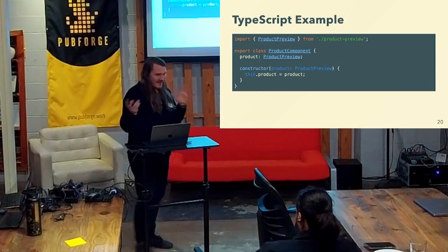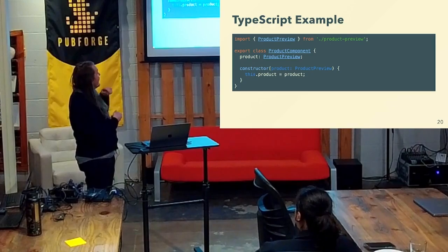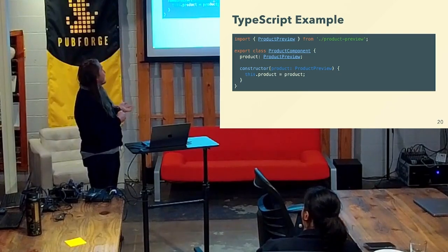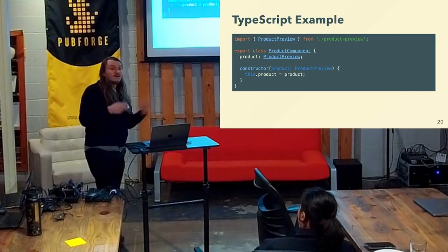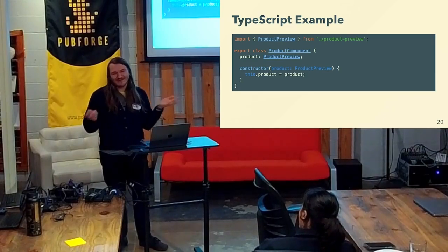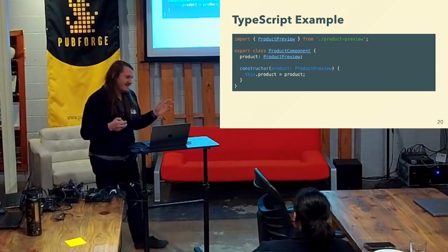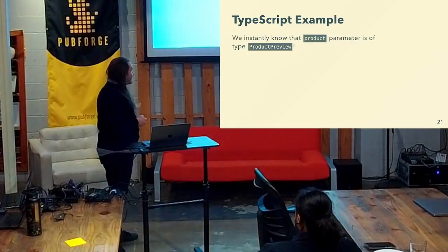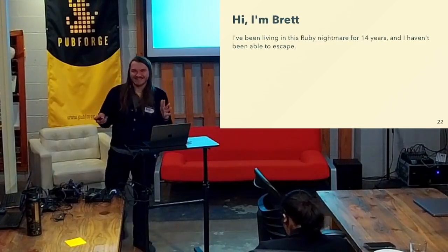Now let's just take that code we first looked at and put it in TypeScript. So, ProductPreview — remember how long it took us to find ProductPreview before? It's the first thing right there. We have basically the attr_reader equivalent, we know it's ProductPreview. And then we have a constructor, which is just like those initializers. And we know that it's of type ProductPreview. Completely different. A little bit more verbose — people might say less elegant. But there's no contest: you don't get paid more for writing elegant code. The software's not better for writing elegant code or shorter code. It's not code golf. And to me, this is a lot more clear. We instantly know what that product parameter is.